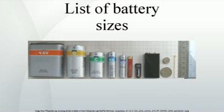The complete nomenclature for the battery will fully specify the size, chemistry, terminal arrangements and special characteristics of a battery. The same physically interchangeable cell size or battery size may have widely different characteristics. Physical interchangeability is not the sole factor in substitution of batteries.